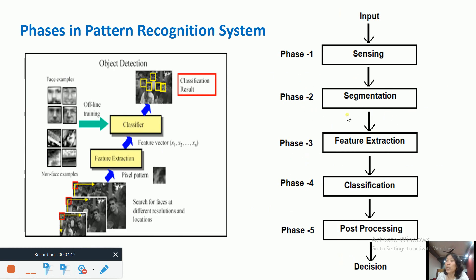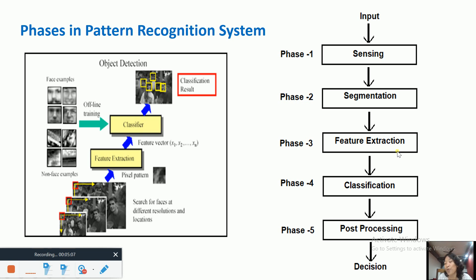The second phase is segmentation. Segmentation is the process of isolating the object of interest from the background or from other objects — that is, separating the object of interest from everything else. The third phase is feature extraction: the process of choosing useful features from the pattern so that we can discriminate the pattern from other patterns.